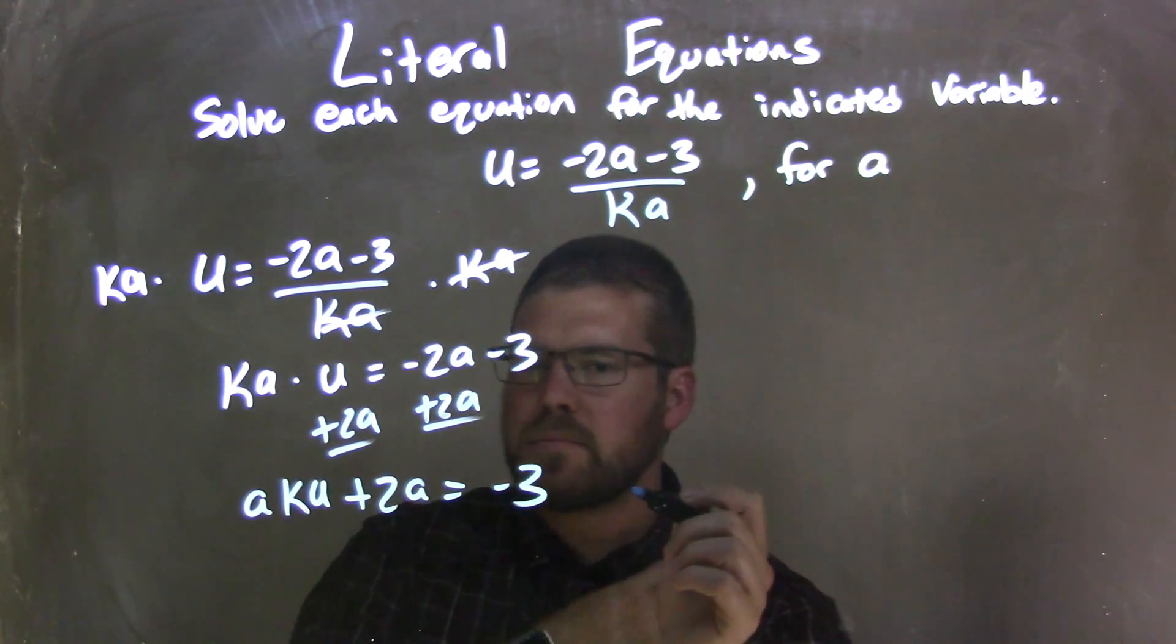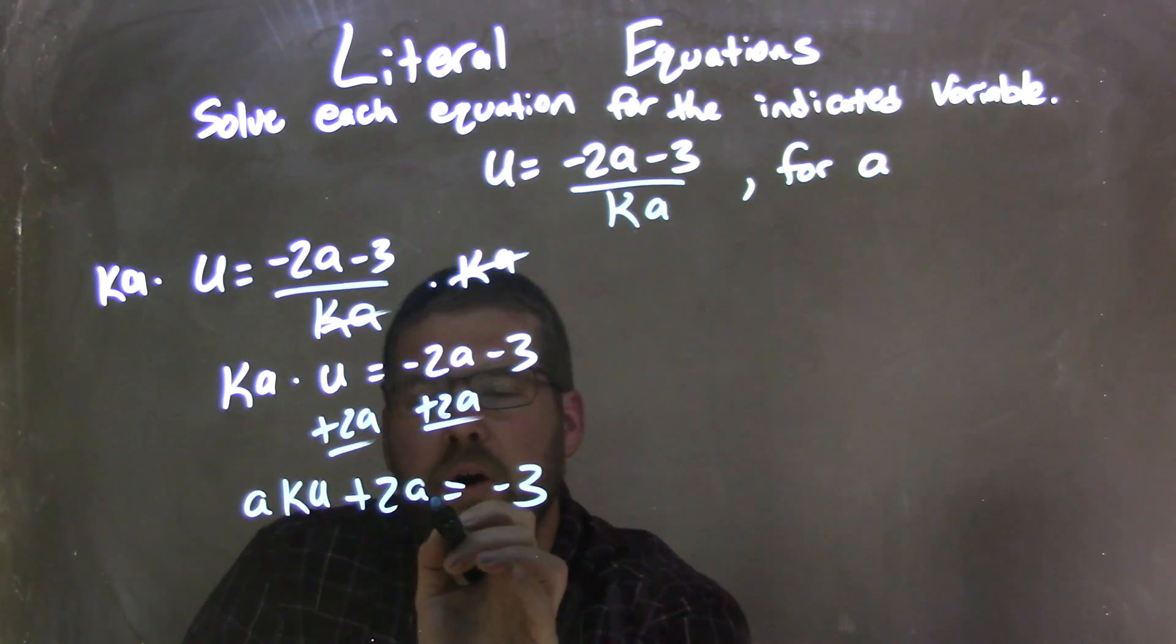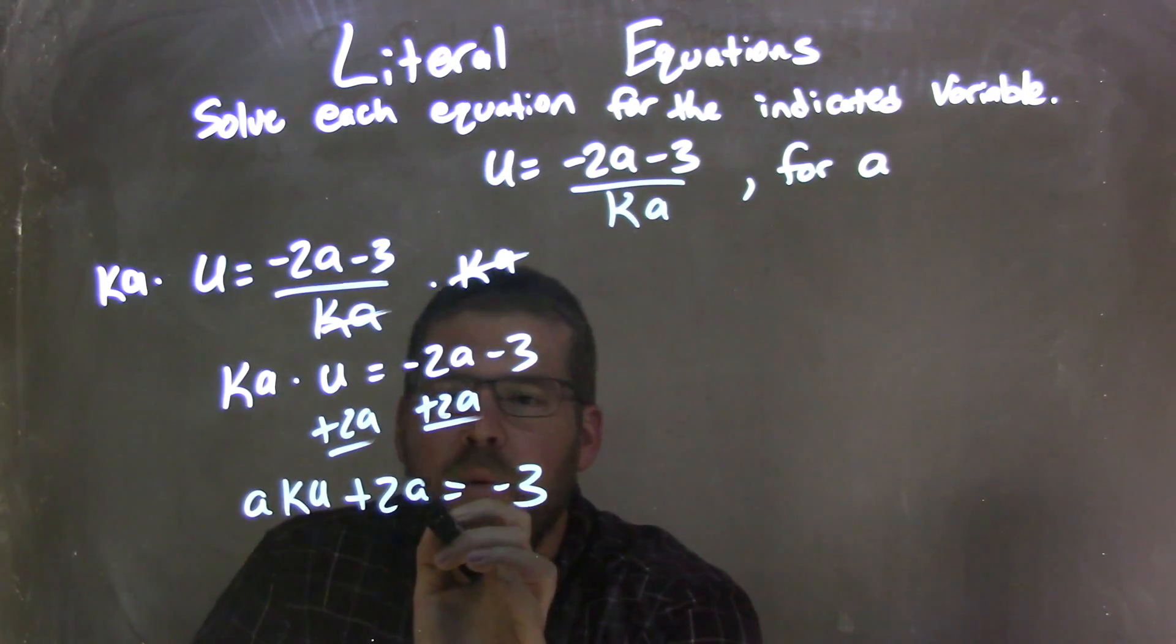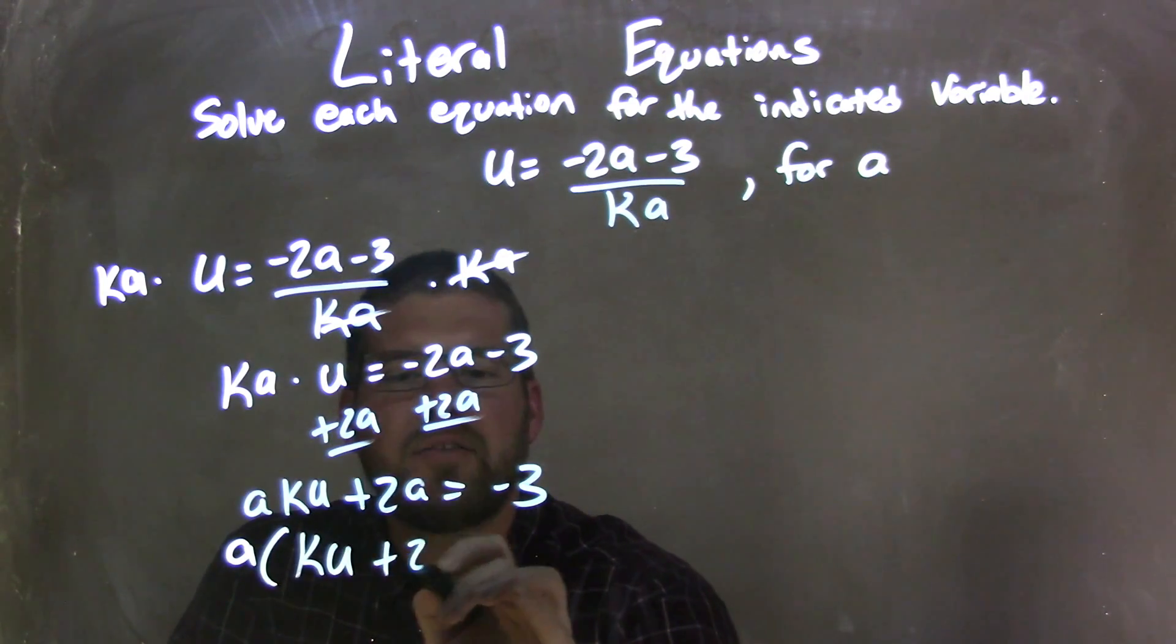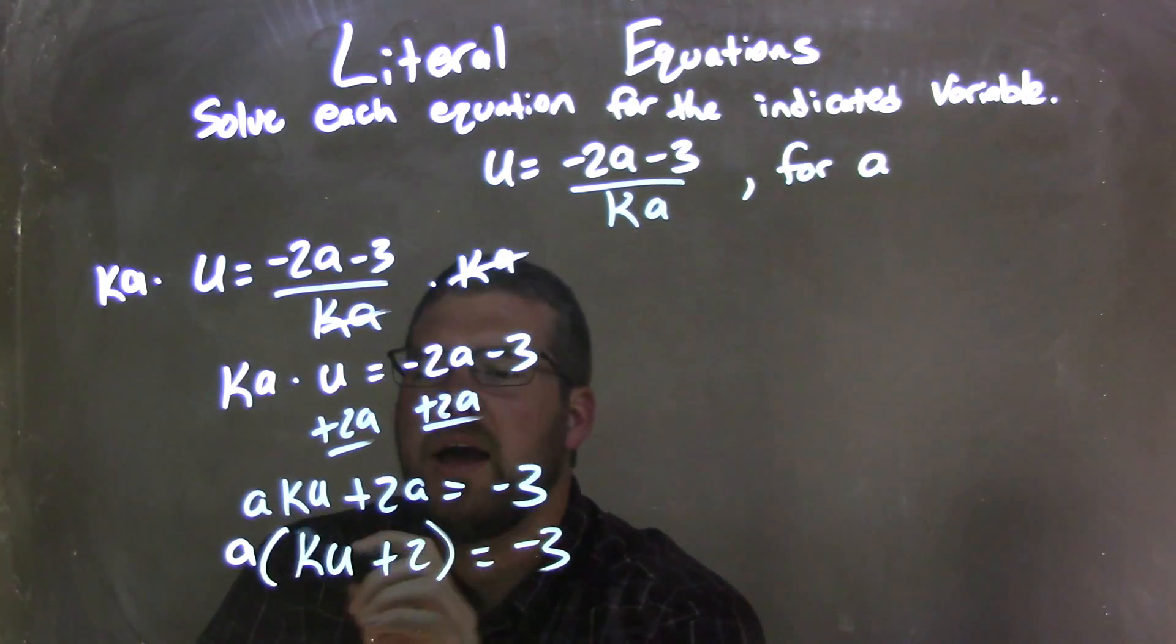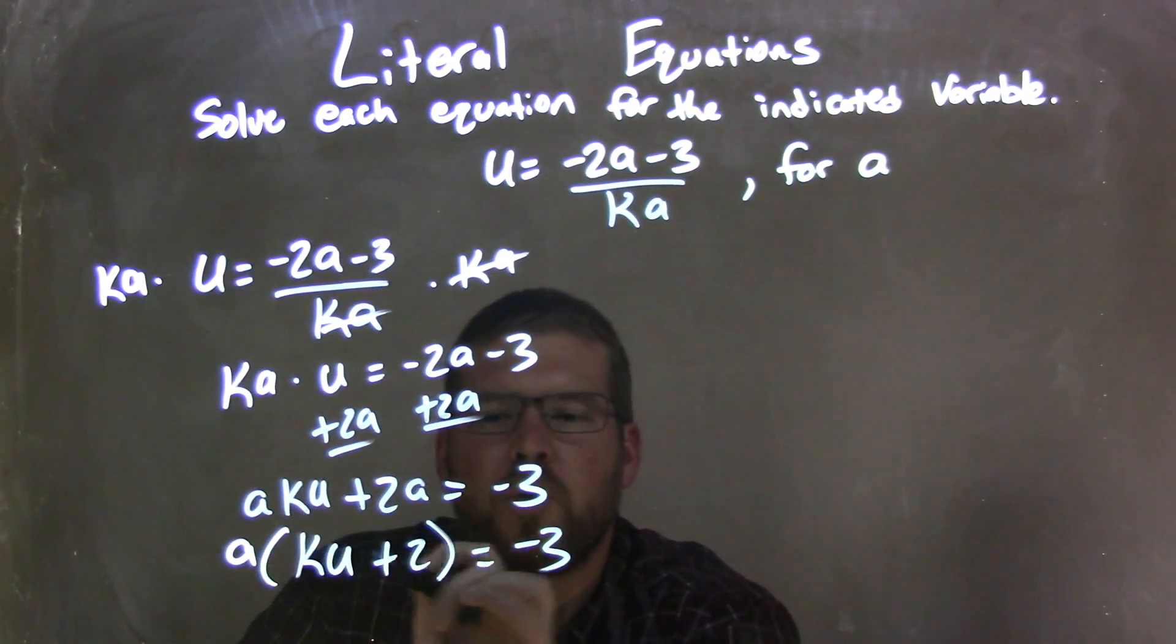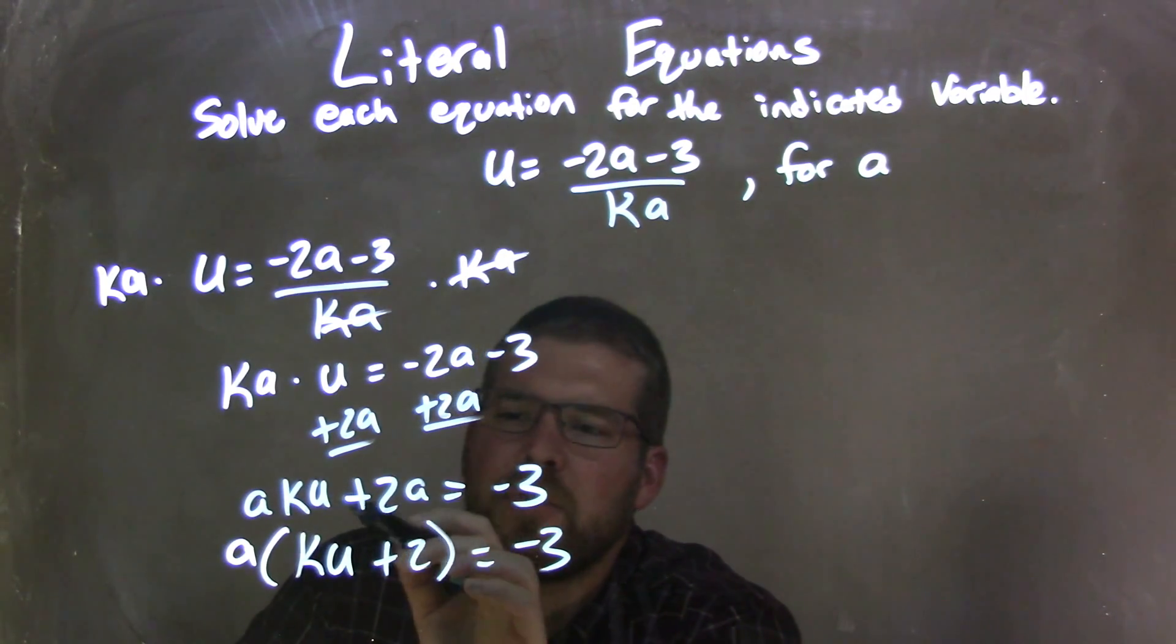So what I can do then, I see there's an a in both parts there. So if I pull an a out, I'm left with a times parenthesis ku plus 2 equals negative 3. And we can see I can distribute that a across to both parts there, and I get what's written up there, a ku plus 2a.